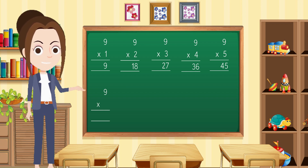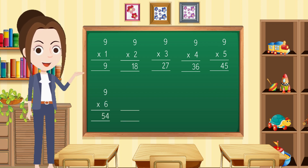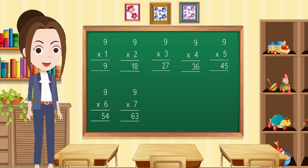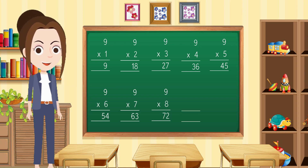Nine times six: fifty-four. Nine times seven: sixty-three. Nine times eight: seventy-two.